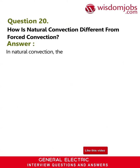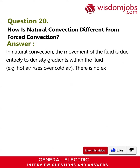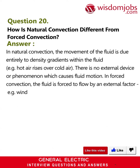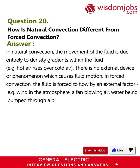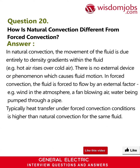Question 20: How is natural convection different from forced convection? Answer: In natural convection, the movement of the fluid is due entirely to density gradients within the fluid — for example, hot air rises over cold air. There is no external device or phenomenon which causes fluid motion. In forced convection, the fluid is forced to flow by an external factor, for example wind in the atmosphere, a fan blowing air, or water being pumped through a pipe. Typically, heat transfer under forced convection conditions is higher than natural convection for the same fluid.